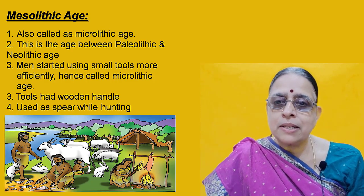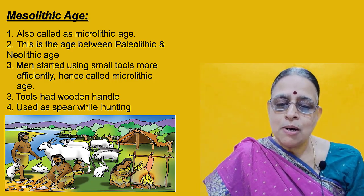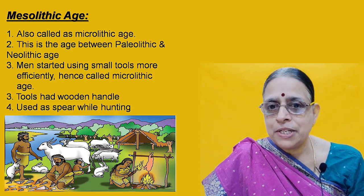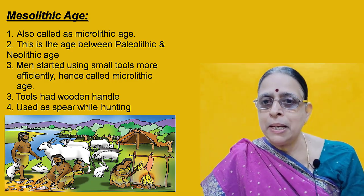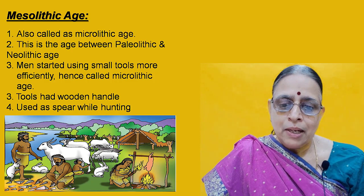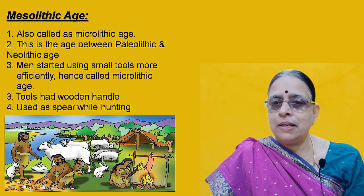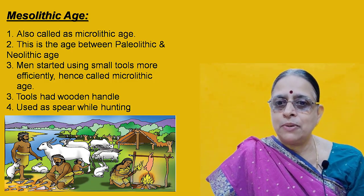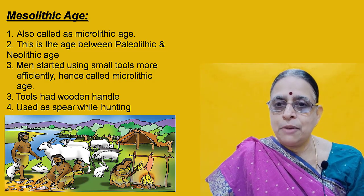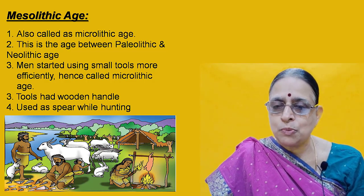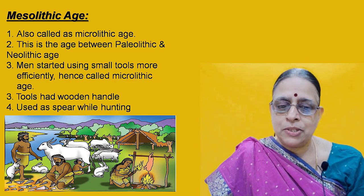Why is it called the Mesolithic Age? Men started using small tools which were more efficient than the tools made during the Paleolithic Age. That is why it is also called the Microlithic Age. Micro means small. The stone weapons which were made were efficient and small in size.